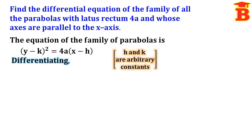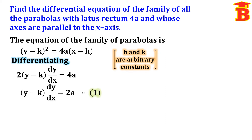Differentiating (y − k)² = 4a(x − h): the left side gives 2(y − k) dy/dx, and the right side gives 4a times 1, since the constant h differentiates to 0. Cancelling 2 from both sides gives (y − k)(dy/dx) = 2a. Take this as equation 1.